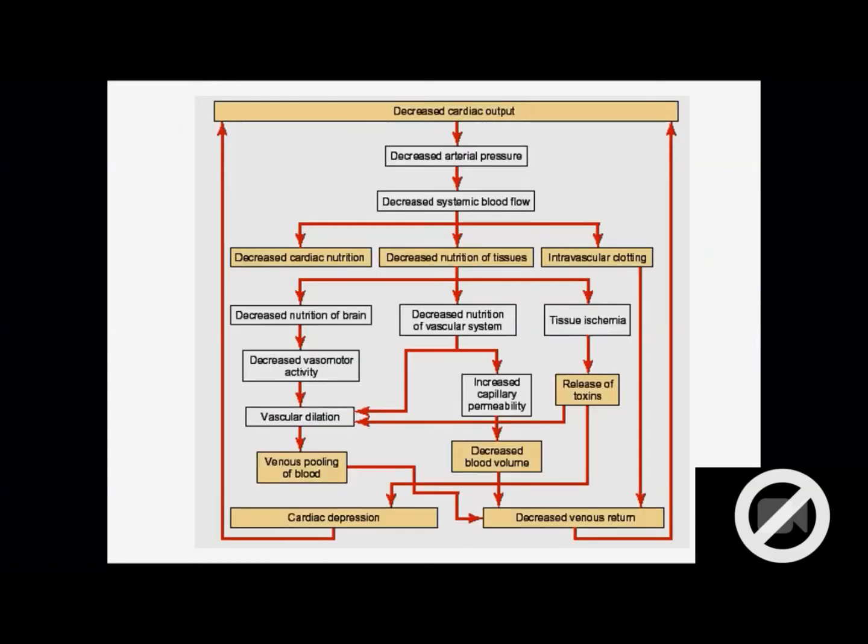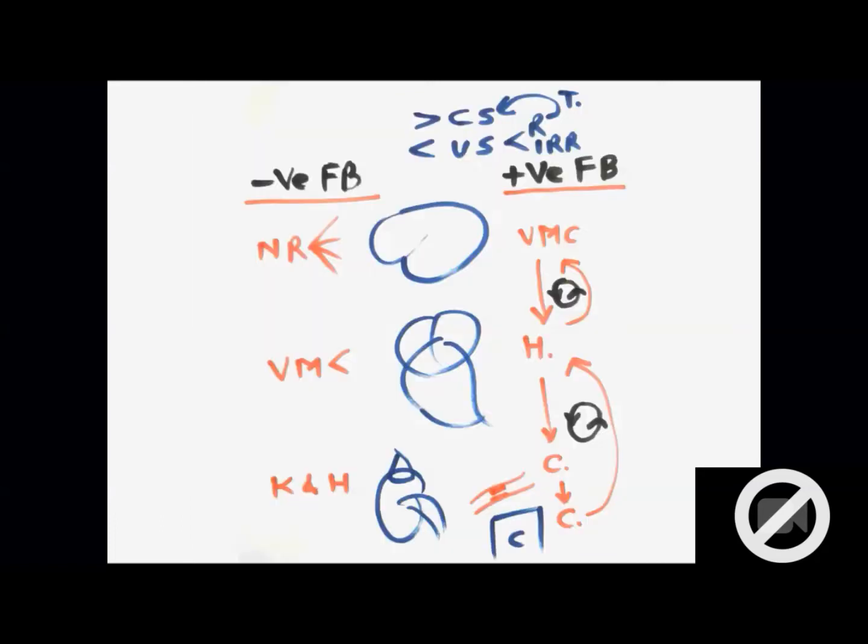But I would suggest that you explain the two important vicious cycles in your own style. That is more than sufficient. Actually the same thing is shown. Here vasomotor center, decreased activity of brain, this is cardiac depression, this is tissue ischemia, release of toxins. Same thing is written. But I suggest you explain those two vicious cycles in your own style in the exam. That will be more than sufficient and it will be an impressive answer.